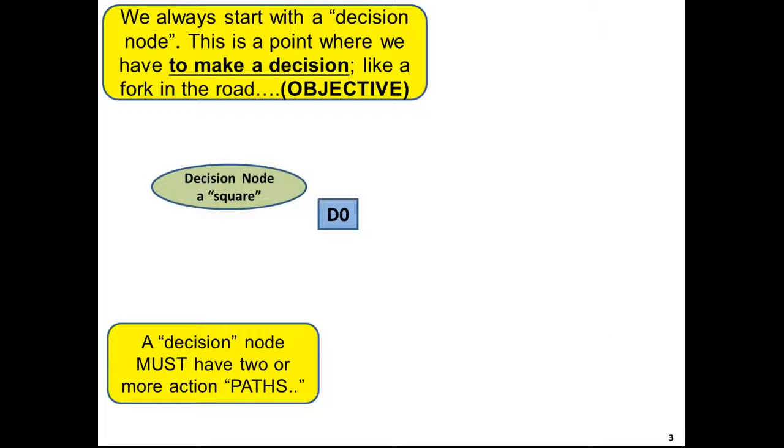We always start with a decision node. This is our objective and we have to make a decision. A decision node is always a square node. We use the color blue. You can use any color you like. I prefer you stay on with our recommendations so that we are consistent. And the first node is always D0.